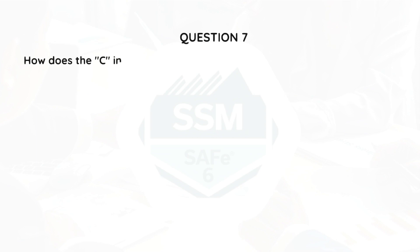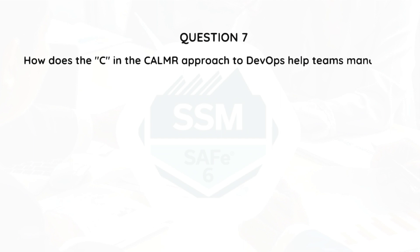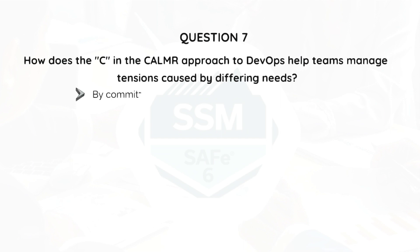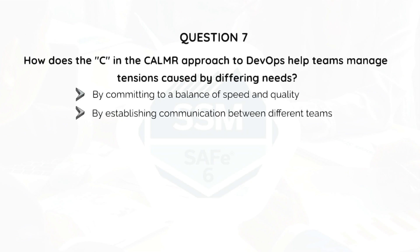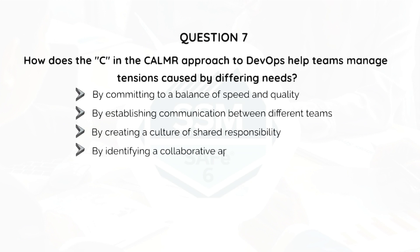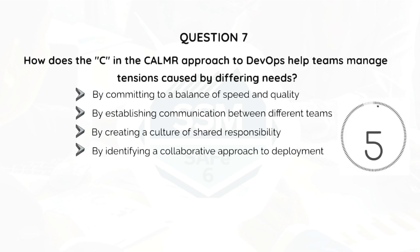Question 7. How does the C in the CALMS approach to DevOps help teams manage tensions caused by different needs? By committing to a balance of speed and quality, by establishing communication between different teams, by creating a culture of shared responsibility, or by identifying a collaborative approach to deployment?